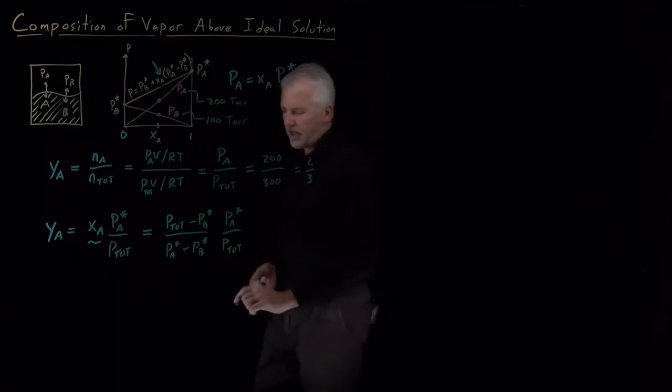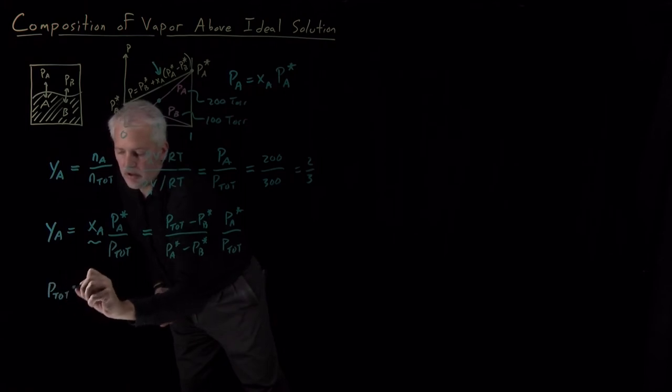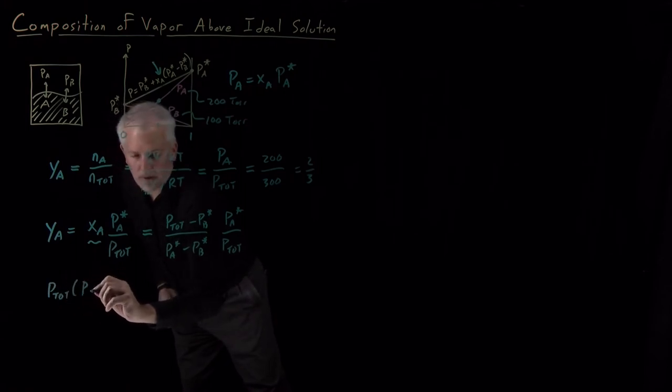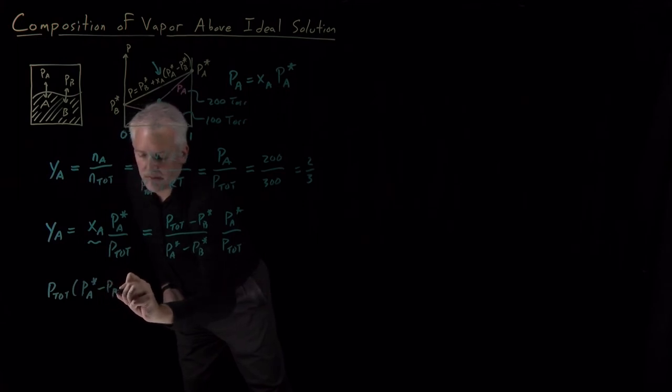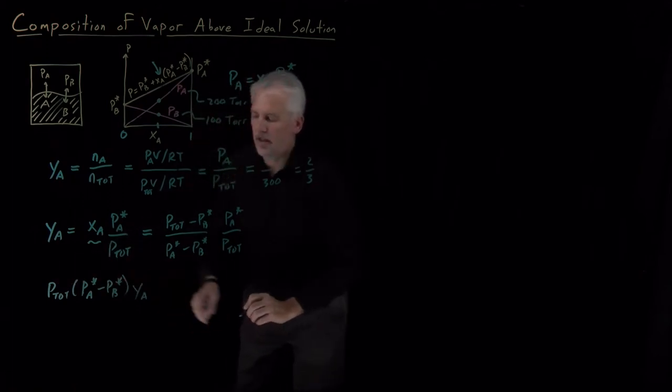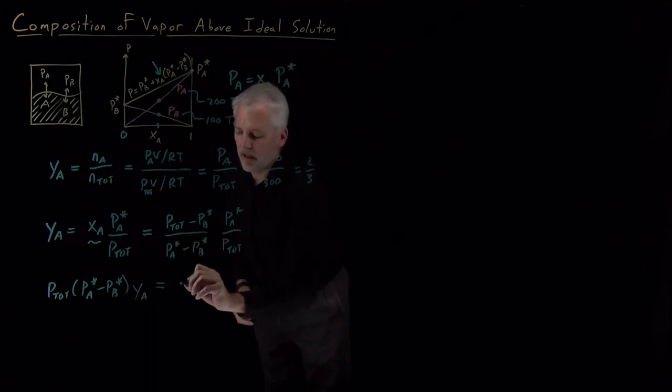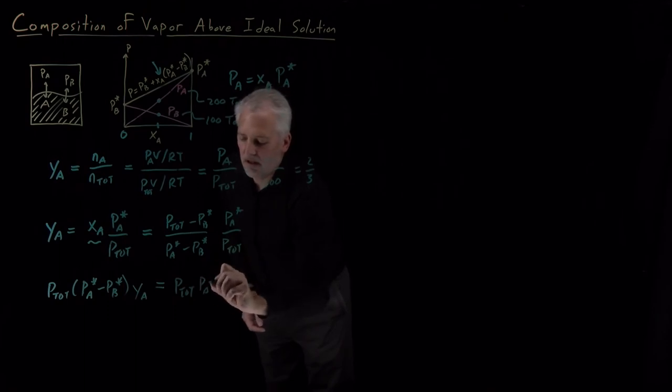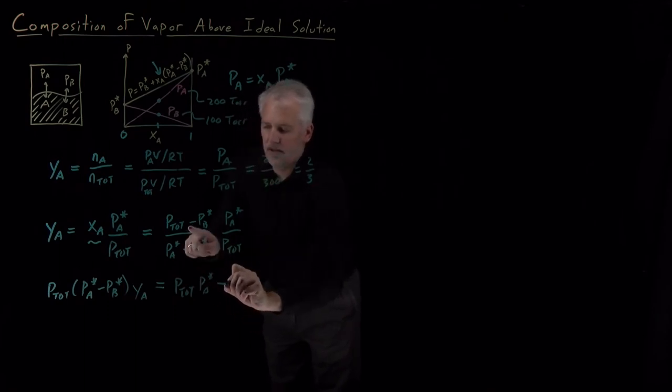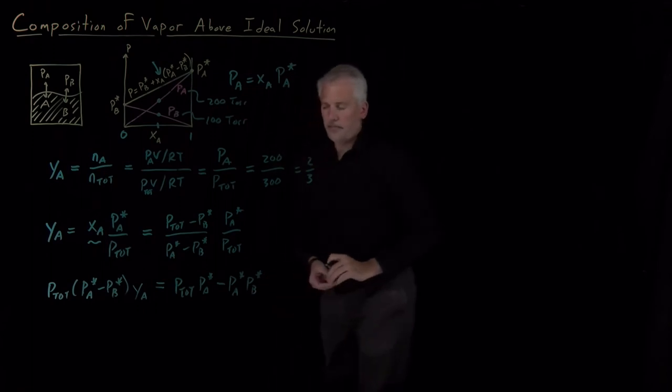To get rid of the denominator, I'll take these two terms and multiply over to the left. So I've got P total times vapor pressure of A minus vapor pressure of B, all multiplying mole fraction. That's on the left side. That's all equal to what's left on the right side, the numerator: P total times PA star minus PA star times PB star.